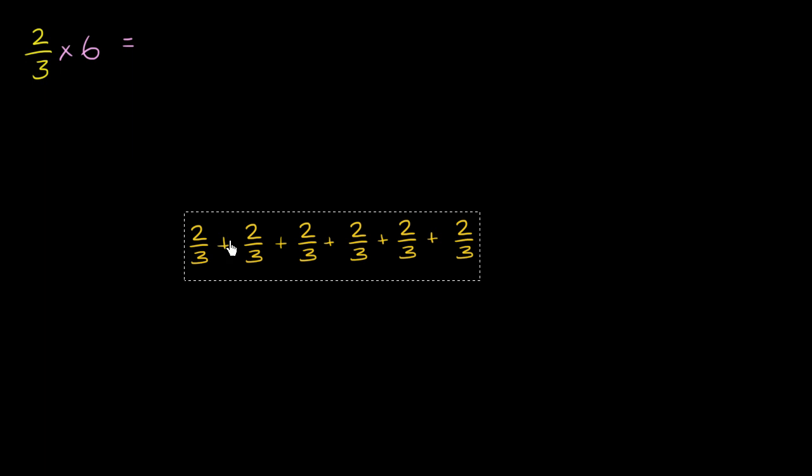Let's think a little bit about what it means to multiply 2/3 times 6. One way to think about it is to literally take 6 two-thirds and add them together. This is 6 two-thirds right over here.